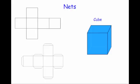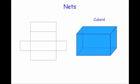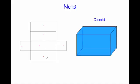Let's have a look at the net now for a cuboid. Here we've got a cuboid and as you can see this would be the net — this would be the base, then the two sides, that would then be the front and the back, and that would be the lid folding over the top.